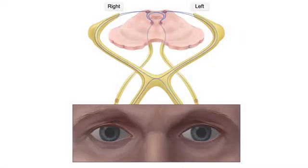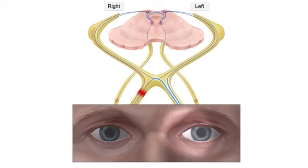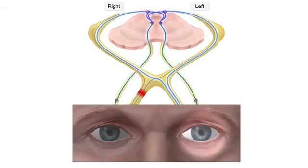Afferent pupillary defect is caused by a lesion in the retina or optic nerve. When light enters the affected eye, interruption of afferent fibers prevents both direct and consensual pupillary constriction. When light enters the unaffected eye, both pupils constrict normally.